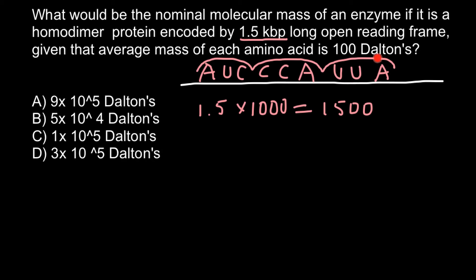As you see, three nucleotides stand for one amino acid. That means we have to divide this number by three, and we're going to get the number of amino acids, which is going to be 500.